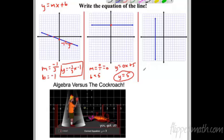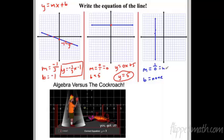Another special case: this line doesn't cross the y-axis at all, so there's no y-intercept. Does it have a slope? It rises constantly but runs zero horizontally. You can't divide anything by zero — that's impossible. So the slope is undefined. All we can say is x equals negative 4. It's a vertical line with undefined slope.